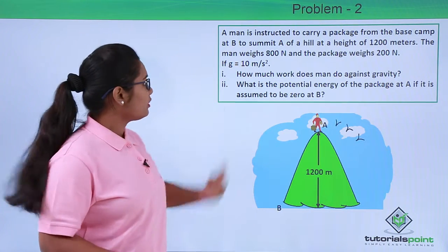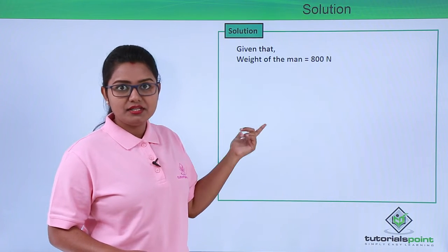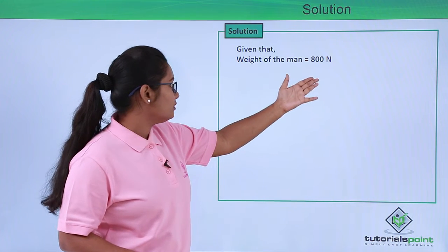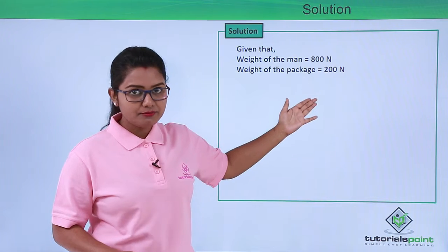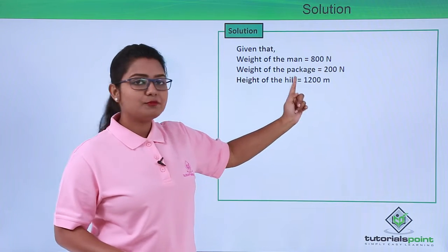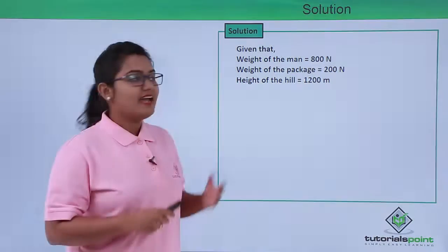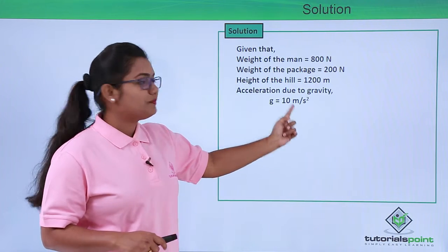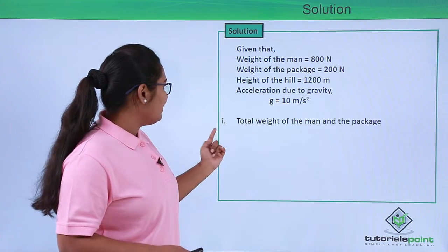First of all, we will list everything that the question has given to us. The weight of the man is 800 Newton, the weight of the package is 200 Newton, the height of the hill is 1200 meters, and the acceleration due to gravity is 10 meters per second squared.